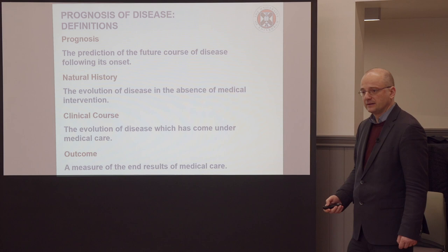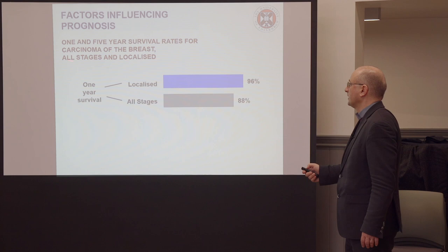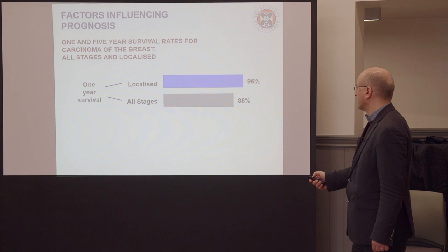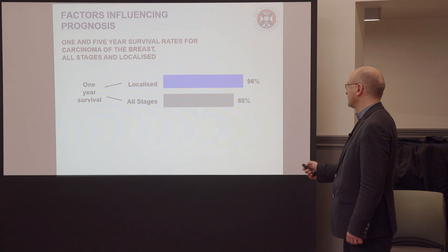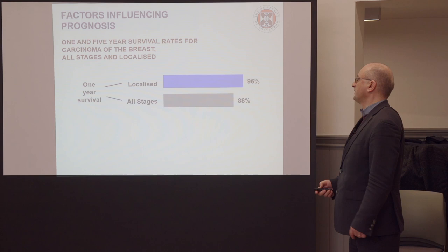Prognosis is the most general term here. When you have one and five year survival rates for carcinoma of the breast for all stages and localized — one year survival for localized breast cancer is 96 percent, all stages together 88 percent. So clearly whether the cancer is localized or we're taking all stages into account, this is a risk factor that influences the prognosis of disease.